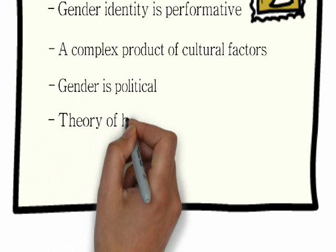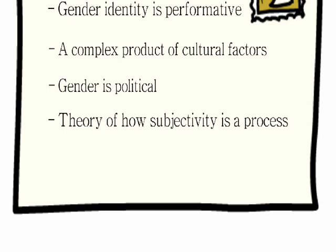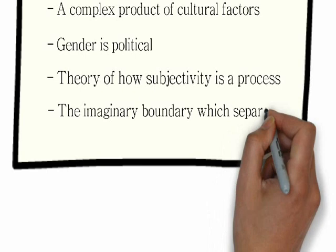Secondly, she talks about Julia Kristeva and her theory of how subjectivity is a process, in which Kristeva declares that the regular notion of identity can be challenged by her theory of subjectivity as discontinuous and constantly in-process. In her theory, she puts the abject as the main cause of the failing systems and the hierarchies of meaning, truth, law and order. She says that there is no clear demarcation between object and subject, between the position of 'I' and the outside world. Kristeva claims that our subjectivity is linked to the consciousness of our bodies, the imaginary boundary which separates our body from the exterior world.